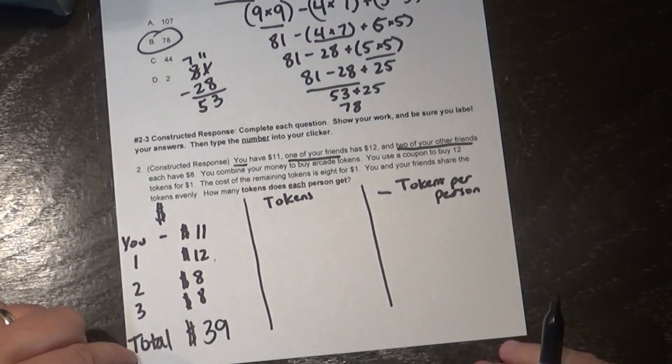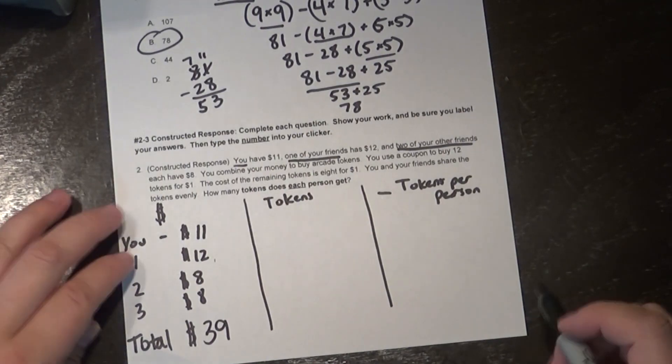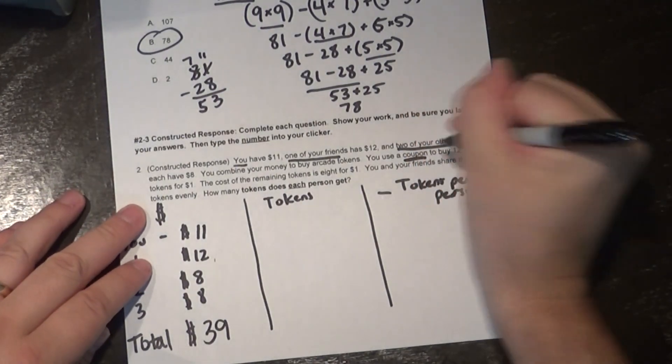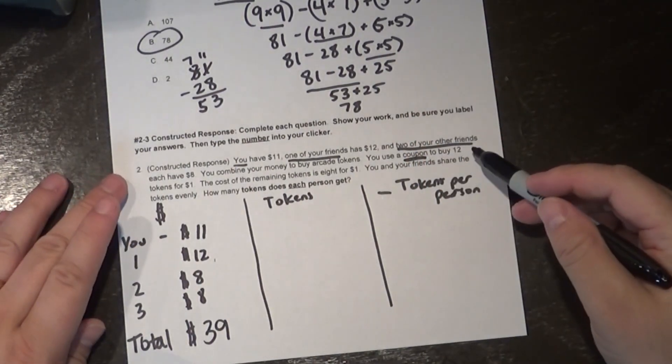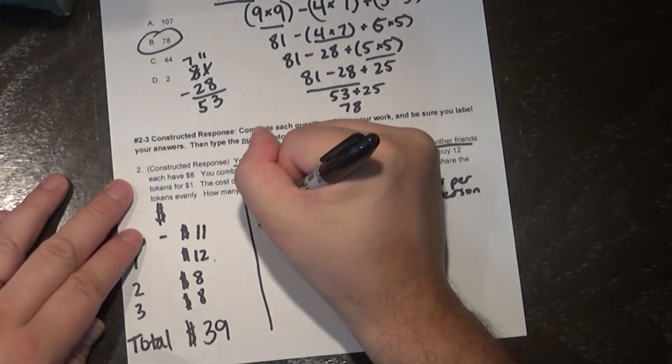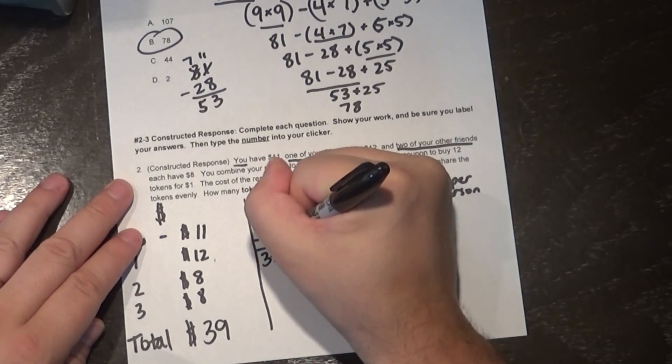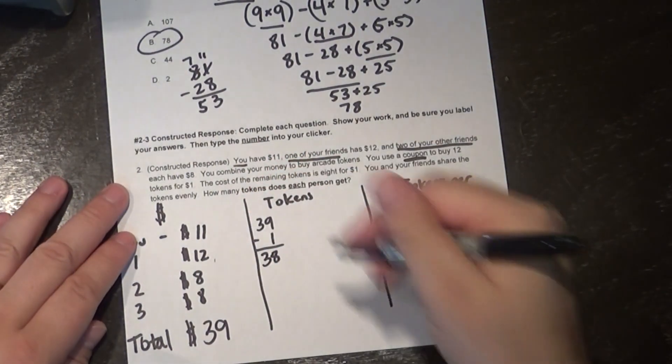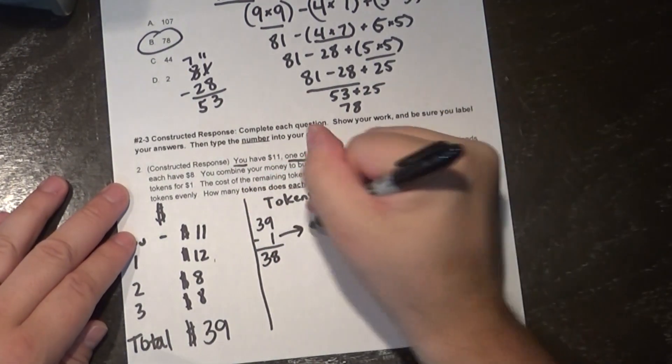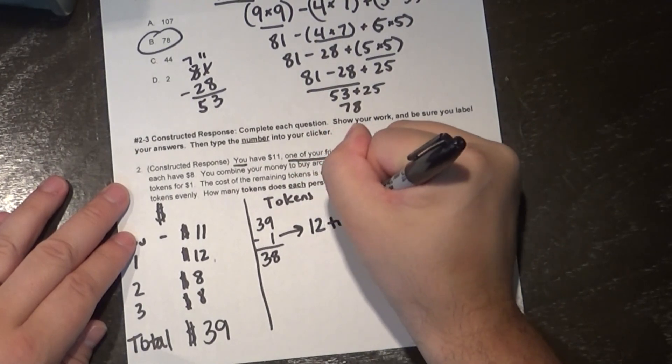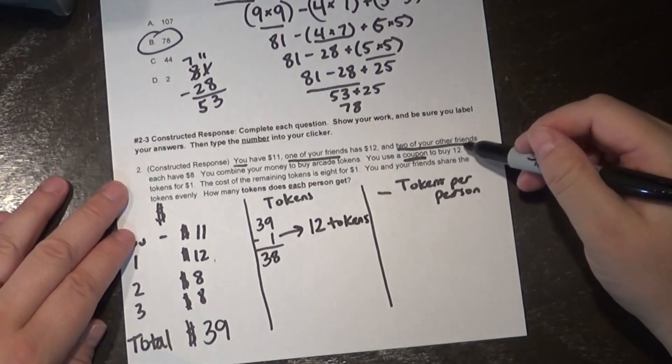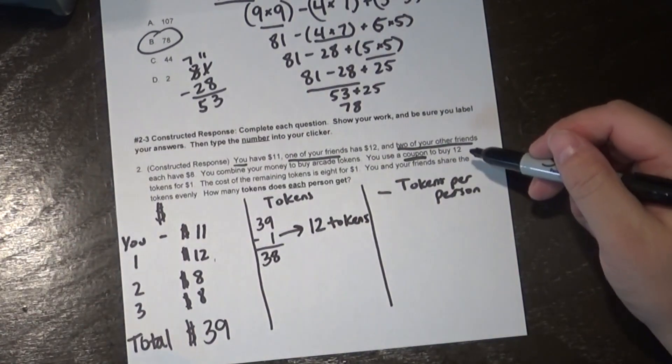So now I want to think about how many tokens I can buy with $39. So first there is this coupon that I have to worry about. It says buy 12 tokens for a dollar. So I'm going to take my $39 that I had, I'm going to subtract 1, and that gives me $38 left. But with that $1 I'm buying 12 tokens, because again we got that special coupon to buy 12 for 1.